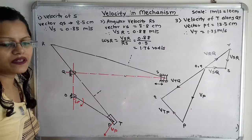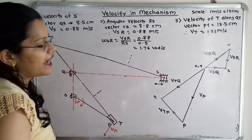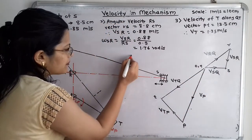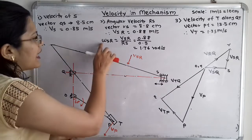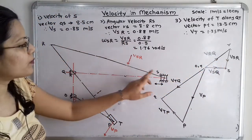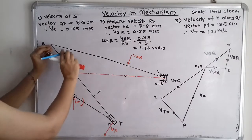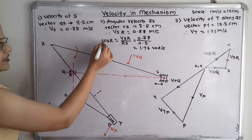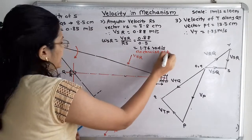So omega_RS = 1.76 rad/s. The velocity is always perpendicular to the link, and here it is in the downward direction. Taking R as center and moving in the downward direction confirms that the direction of this angular velocity is clockwise about center R.